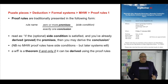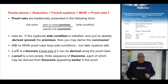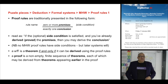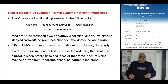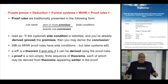A woof is a theorem if and only if it can be derived using the proof rules. A proof is a non-empty finite sequence of theorems, each of which may be derived from theorems appearing earlier in the proof. These are fundamental mathematical concepts — theorem and proof — and when done fully formally, it is nothing other than symbol shuffling.